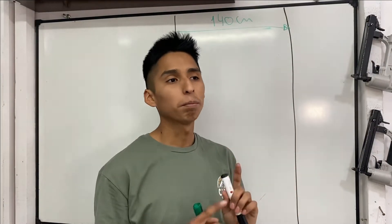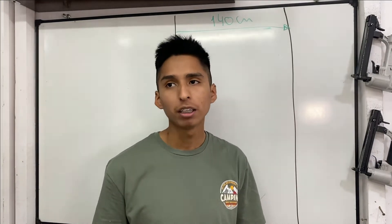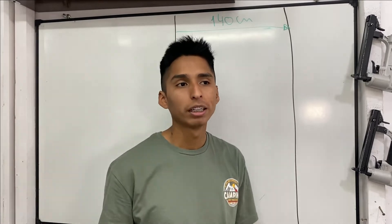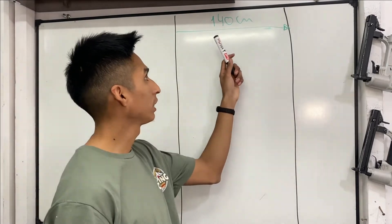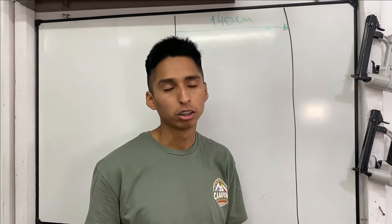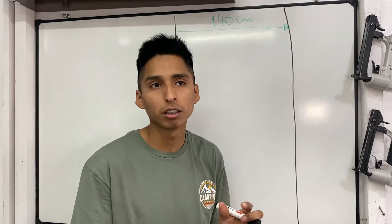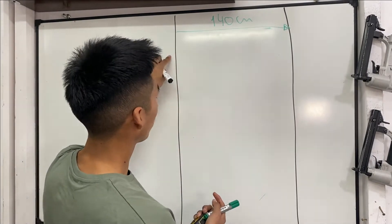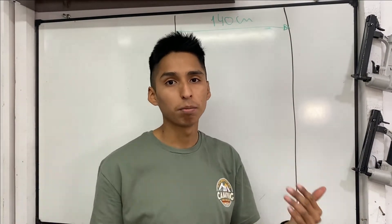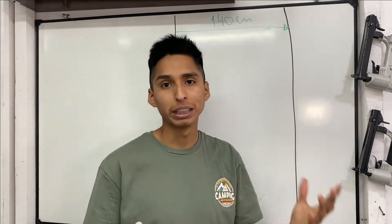Puede ser solamente que sean telas para funda, que sean el pusor o el panamá, entre otras telas que se utilizan para funda, que el ancho es, en vez de ser uno cuarenta, es doble ancho, o sea, quiere decir que es dos metros ochenta. Si ustedes piden, no sé, treinta centímetros, obviamente va a tener treinta centímetros de largo, pero el ancho va a ser dos ochenta. En este caso, que es solamente para tapizar y la parte de tapicería, el ancho siempre va a ser uno cuarenta.